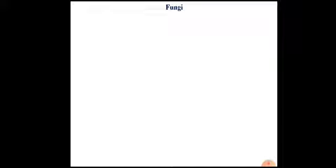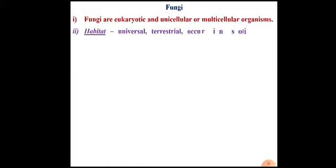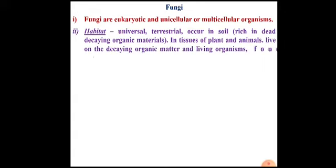In the category of microorganisms, the next organism to study is fungi — singular fungus, plural fungi. It is a class already described according to Whittaker's five kingdom classification system. These are eukaryotic unicellular or multicellular organisms. In general, unicellular fungi are called yeast and multicellular fungi are called molds.